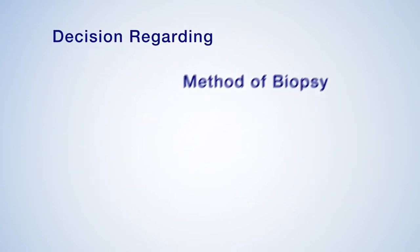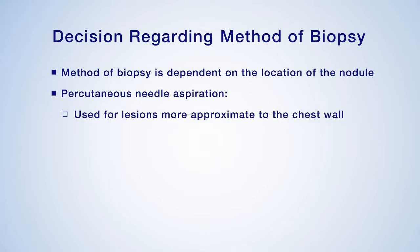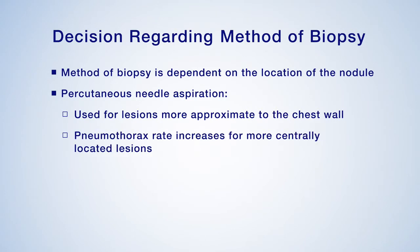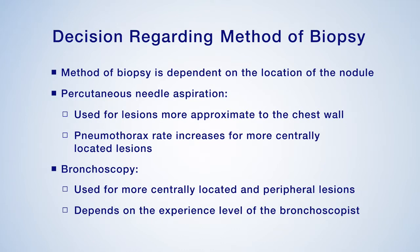The location of a pulmonary nodule may influence the method of biopsy used to obtain a diagnosis. Lesions that approximate the chest wall may be more amenable to percutaneous needle aspiration, while the risk of pneumothorax with this technique increases for more centrally located lesions. Bronchoscopy may be considered for more centrally located lesions, or for peripheral lesions depending on the comfort and experience level of the bronchoscopist. Patients with underlying emphysema who are not optimal candidates for percutaneous biopsy may also be suitable candidates for bronchoscopic approaches.